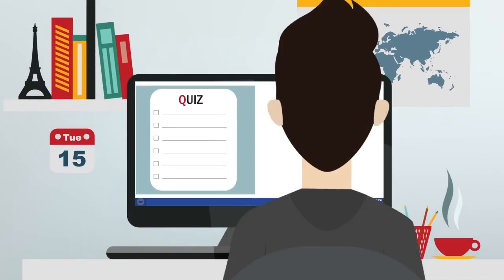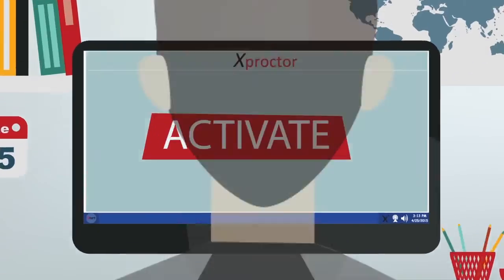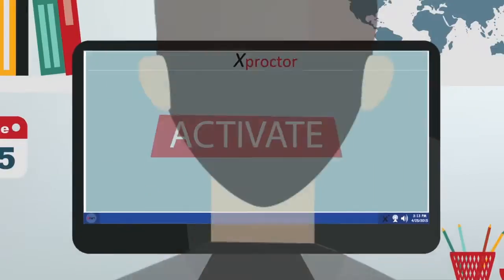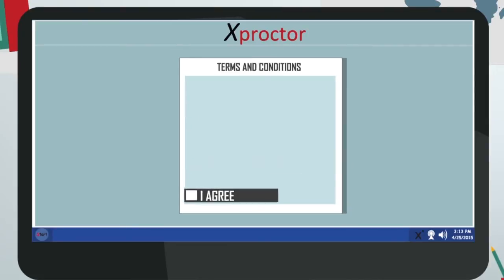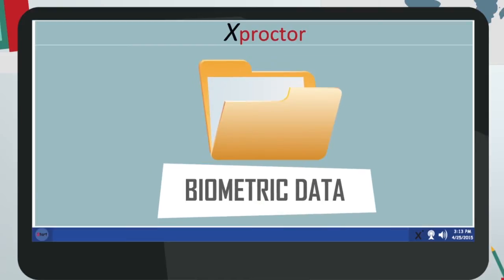Before a learner starts a quiz or exam from any LMS, the learner activates their X Proctor then starts the exam. The university's terms and conditions will be displayed and the learner needs to accept it and give X Proctor permission to start recording series of biometric data configured by his or her school.